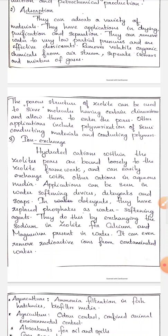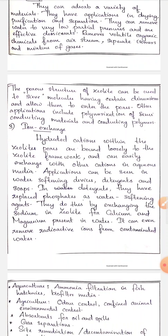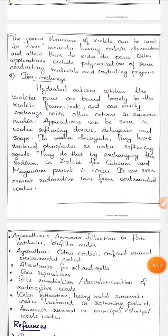But zeolites can replace phosphates as water softening agents by exchanging sodium in zeolite for calcium and magnesium present in water. They can even remove radioactive ions from contaminated water. Zeolites also have applications in aquaculture.